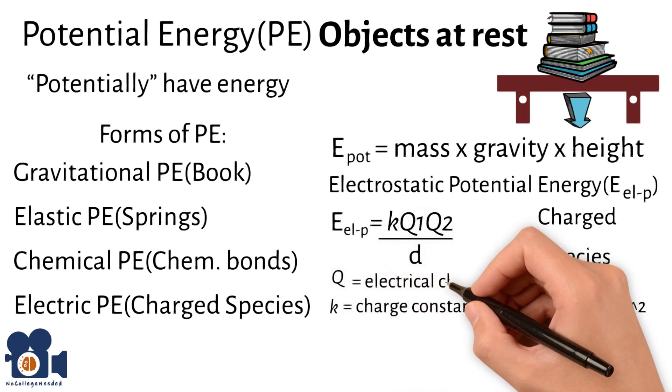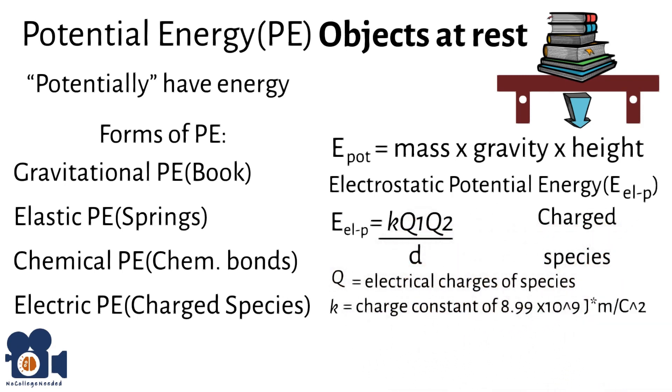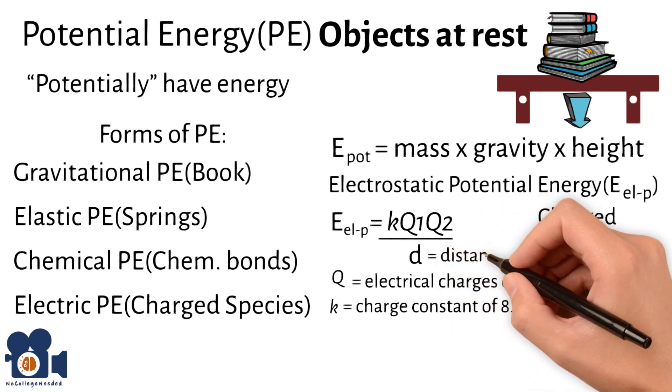Q1 and Q2 are the electrical charges of the specific species you look and calculate, and D is the distance between the species.